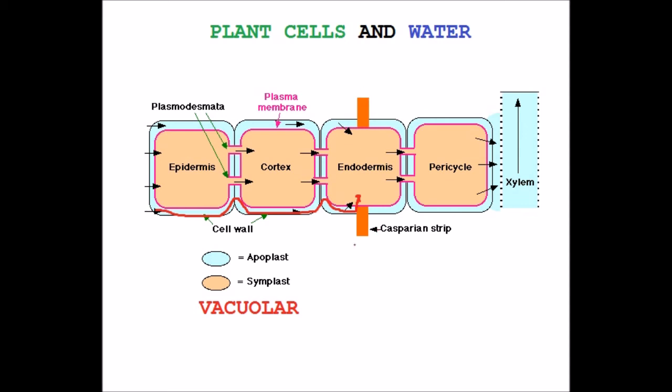We'll learn more about the Casparian strip in the next video. The symplast pathway means that water enters the cell cytoplasm through the plasma membrane. It can then pass through the plasmodesmata, which are these things here and here, from one cell to the next.